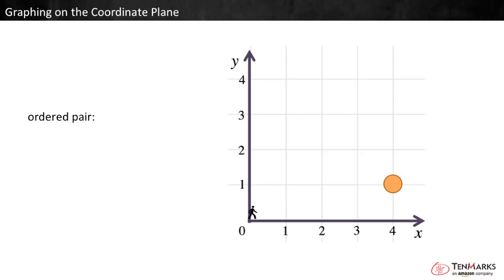Imagine starting at the origin, and walking along the x-axis until you reach the point. You would walk one, two, three, four spaces. So the x coordinate is four, which means it is four units to the right of the origin.